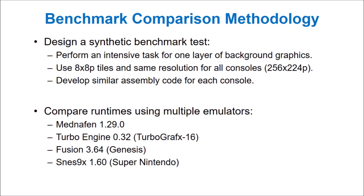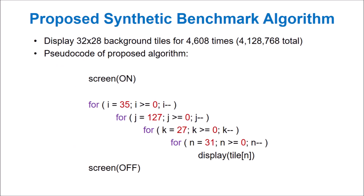We will now design a synthetic benchmark to test the performance of each console's video display processor. A synthetic benchmark uses an intensive algorithm that is designed to push a system to its limit. To be fair to all consoles, we'll use an 8x8 pixel tile grid with a resolution of 256x224 pixels. Once we are ready, we'll run a comparison test using multiple emulators, which will provide greater confidence that the results are close to testing on real hardware. Our proposed algorithm is to display 32x28 background tiles for 4,608 times, equivalent to drawing over 4 million background tiles.